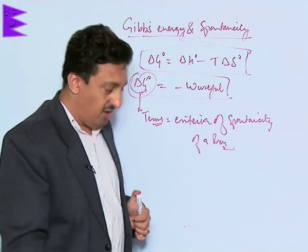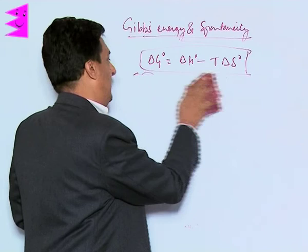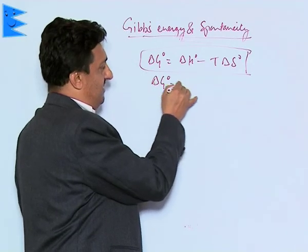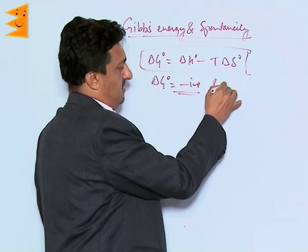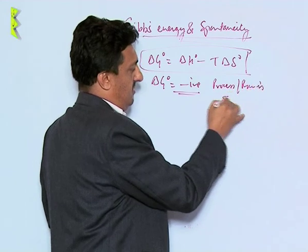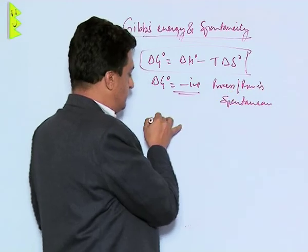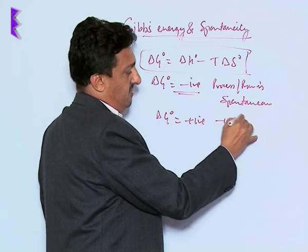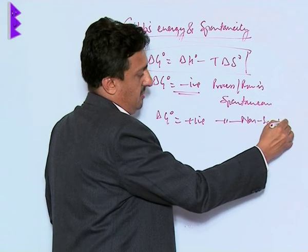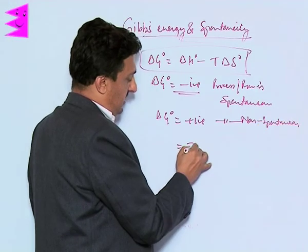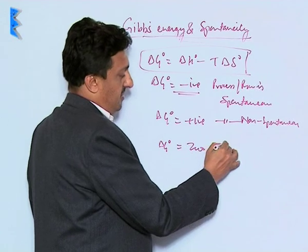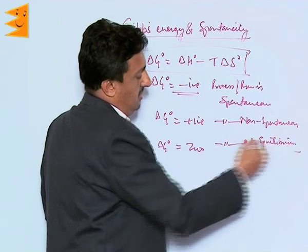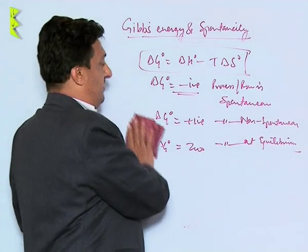Delta G is the deciding criterion of spontaneity of a reaction. If delta G is negative, the process or reaction is spontaneous. If delta G is positive, the process or reaction is non-spontaneous. If delta G equals zero, the reaction or process is at equilibrium.